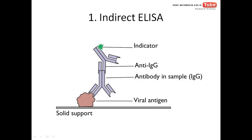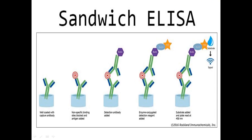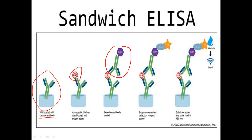Next is the sandwich ELISA. First, we add the primary antibody, which is also called the capture antibody, to the microtiter plate. Then we add the antigen or the sample — if the sample contains the antigen, the antigen and antibody will have affinity and will bind. Then we add a secondary antibody that is labeled or conjugated with the enzyme.